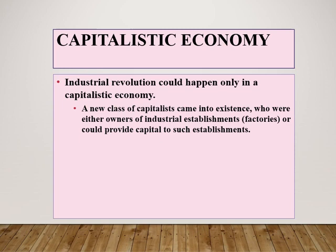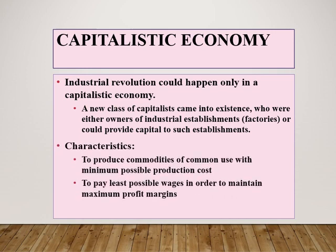The Industrial Revolution could happen only in a capitalistic economy. In the capitalistic economy, a new class of capitalists came into existence — they were either owners of industrial establishments and factories, or could provide capital to such establishments to produce commodities of common use with minimum possible production cost and pay the least possible wages in order to maintain maximum profit margins.